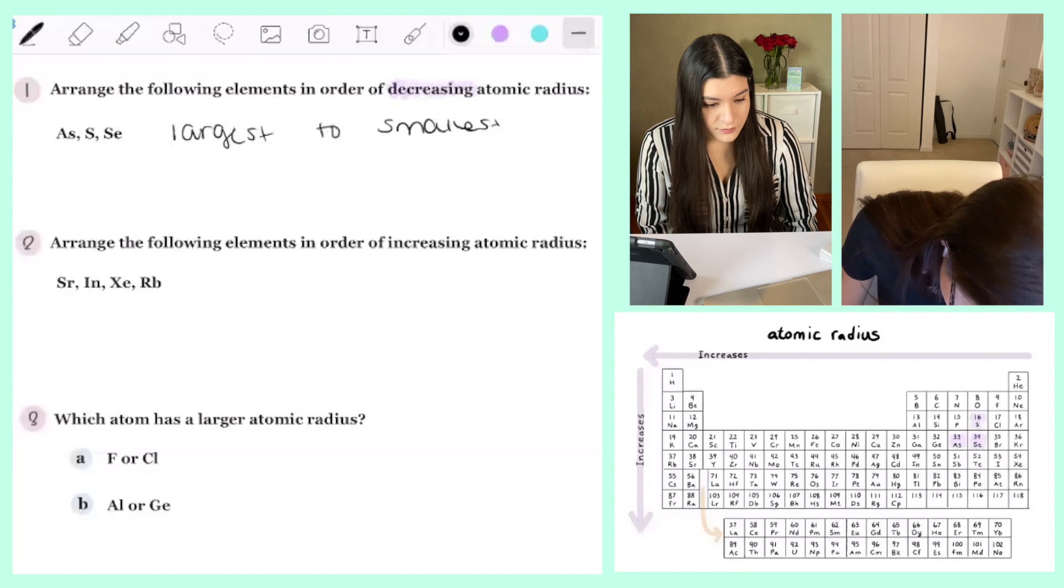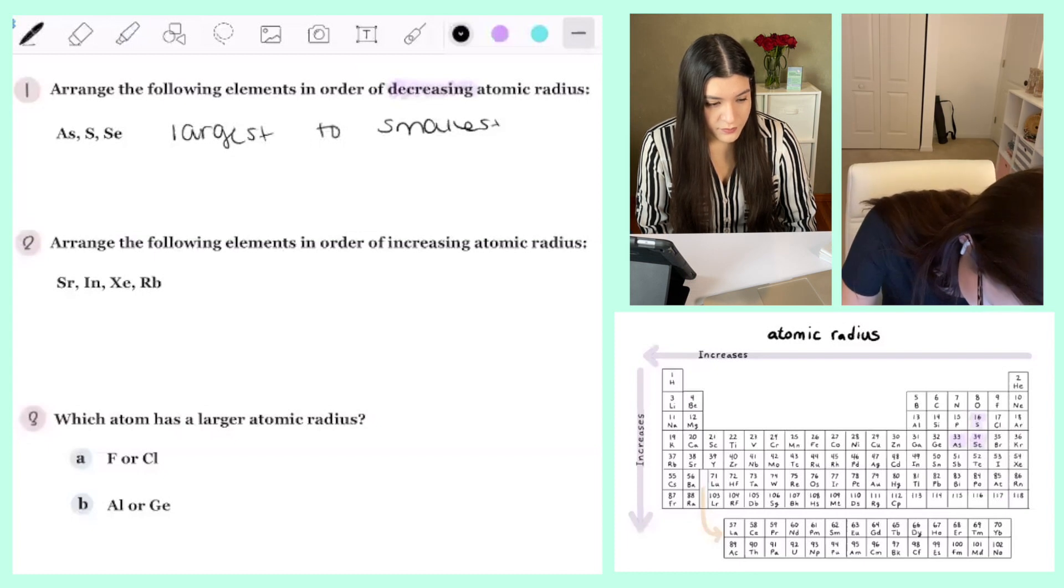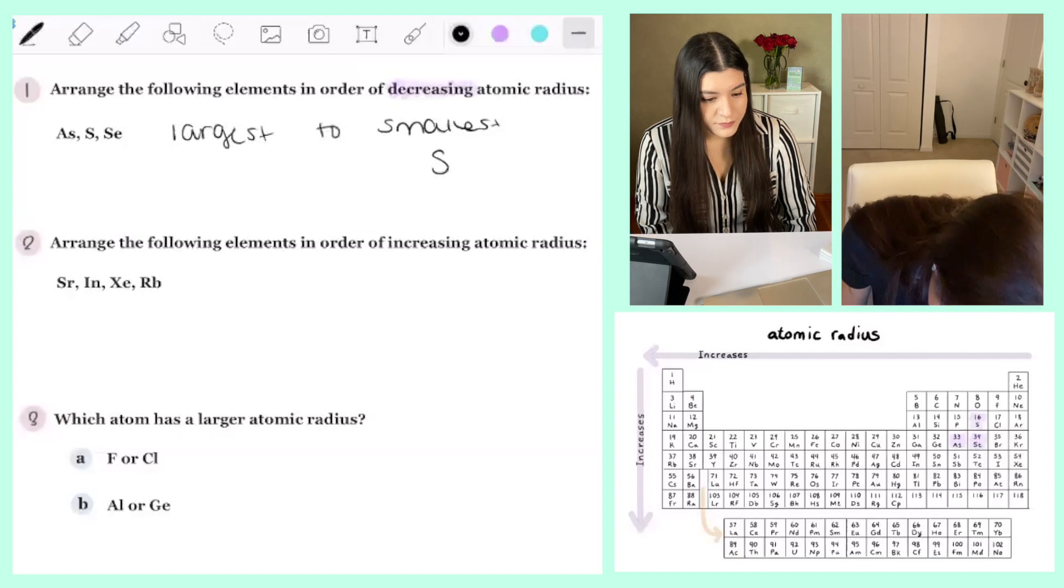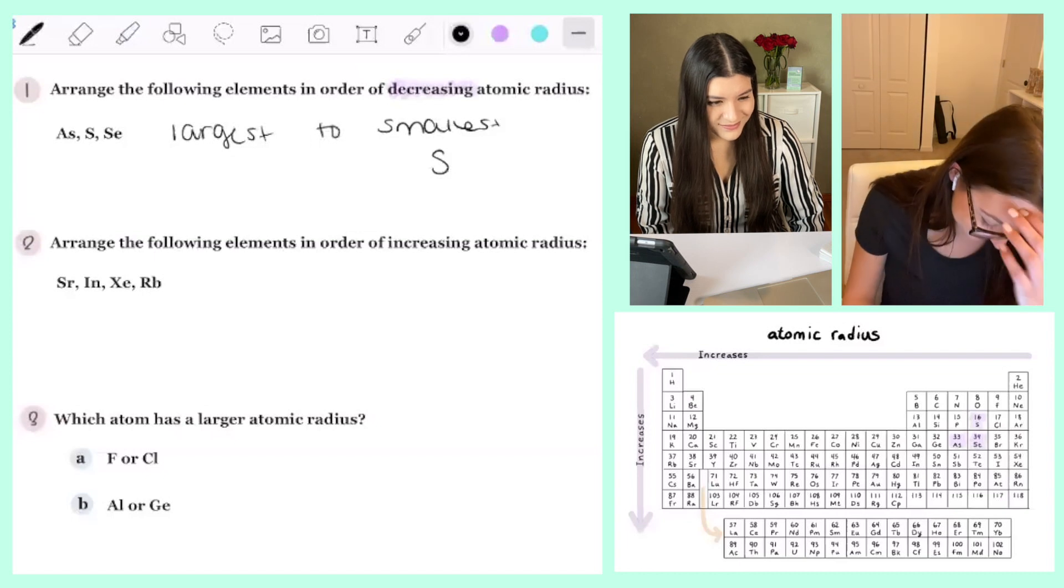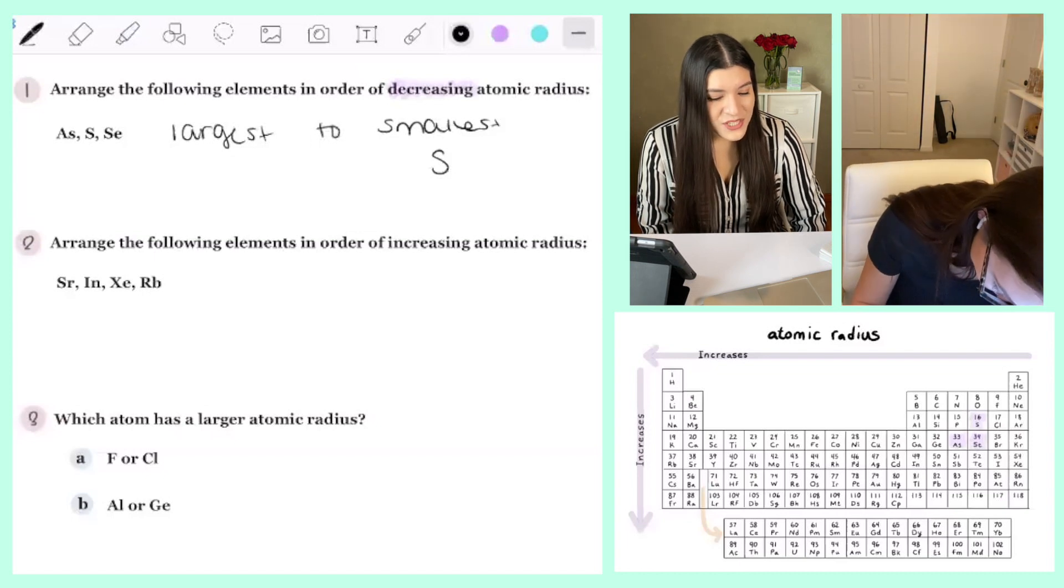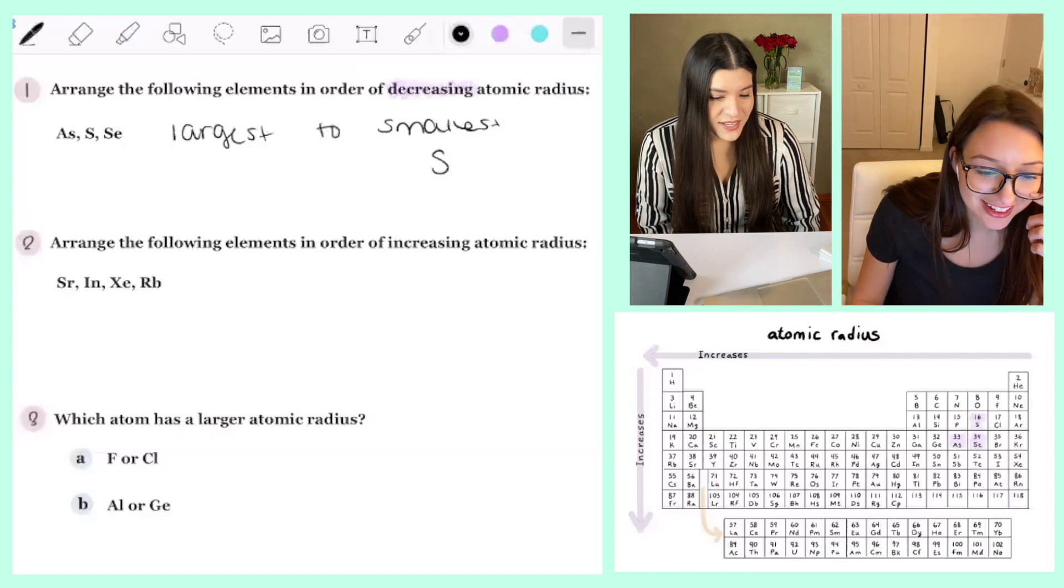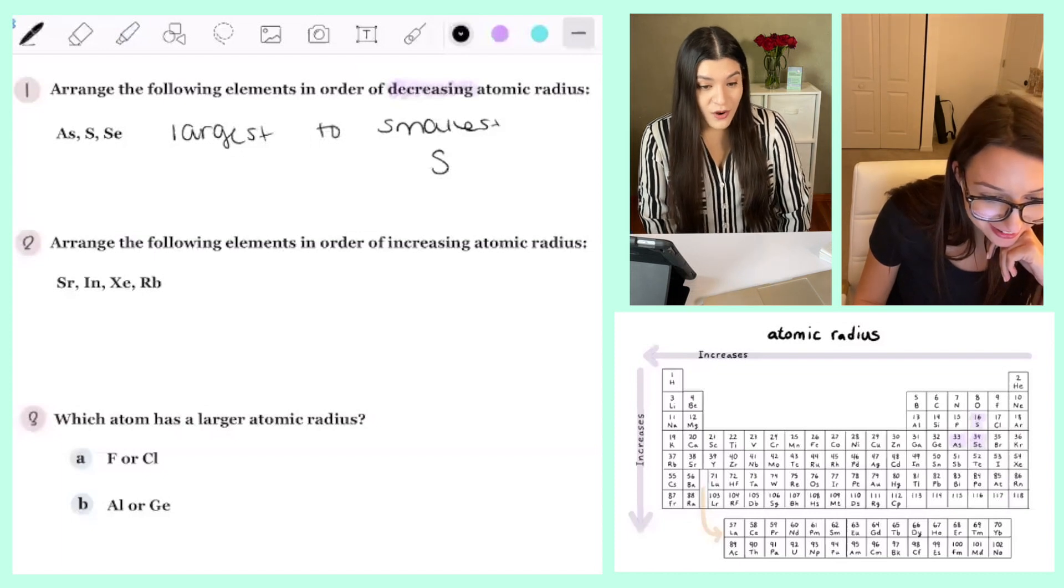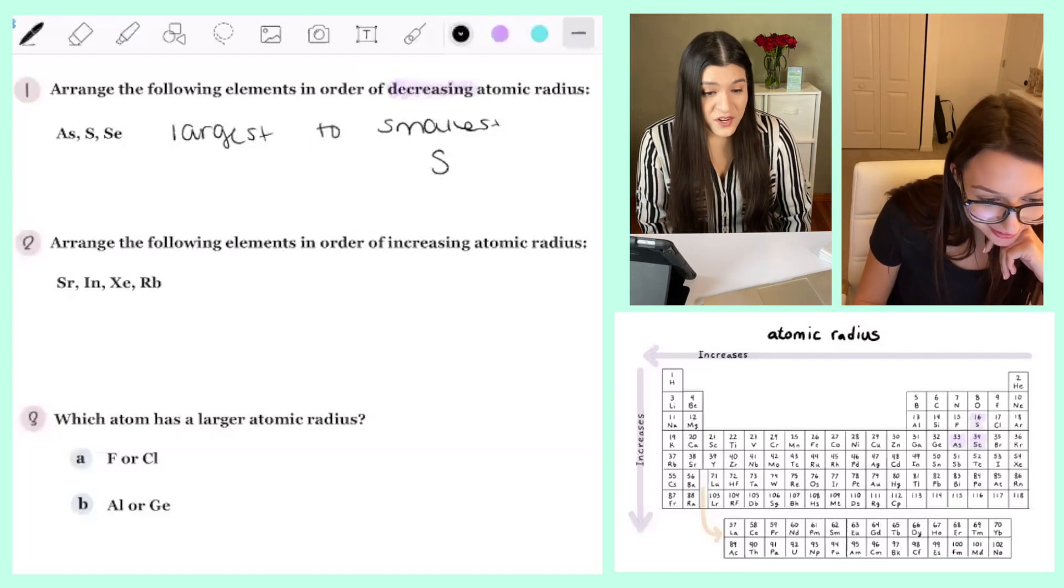So that means that the smallest is gonna be sulfur. Good. And then it would go, I'm just confused because these two were right next to each other. Which trend are we looking at though? Because they're on the same row. So they're on the same row. It's not opposing trends.